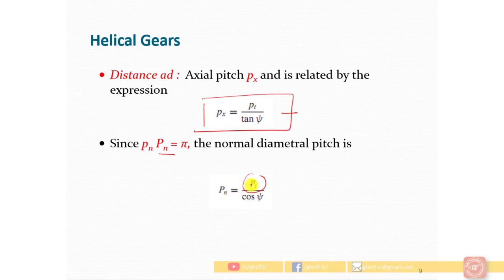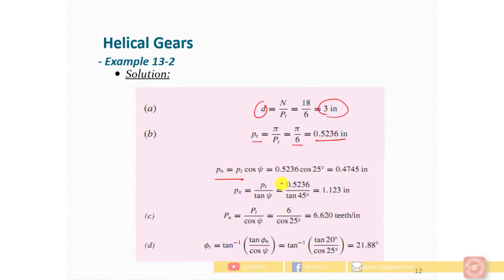The normal pitch is PT divided by cos ψ. PT is 0.523, and cos of the helix angle 25 degrees gives us the normal pitch PN which is 0.4745 inches.